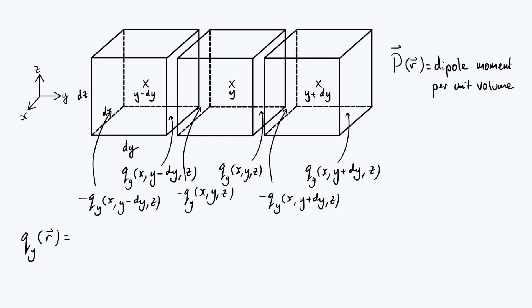Let's call it P subscript y, multiply it by the volume of one of the cubes, which of course is just dx dy dz, divided by the separation which is going to be dy because those left hand and right hand faces are separated only along the y-axis. The dy's cancel and you get the y component of polarization multiplied by dx dz.